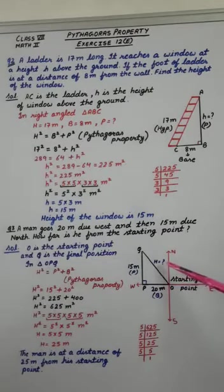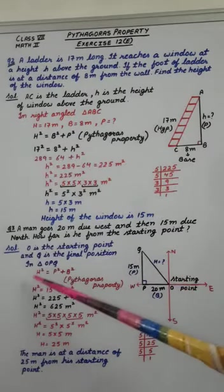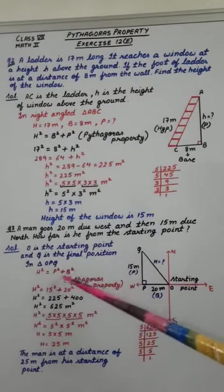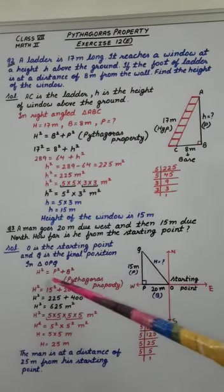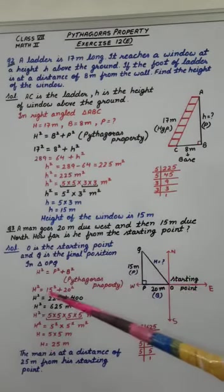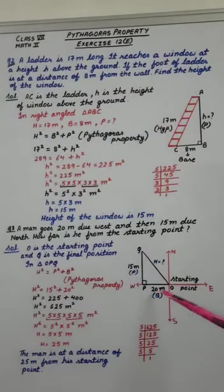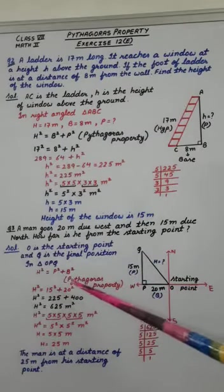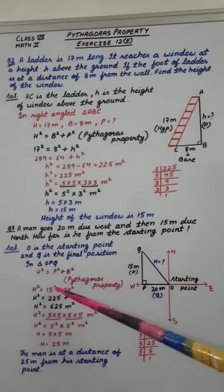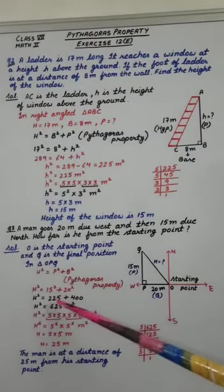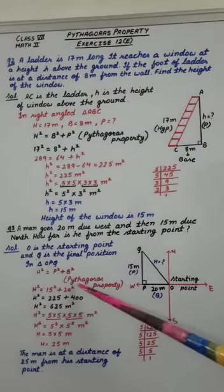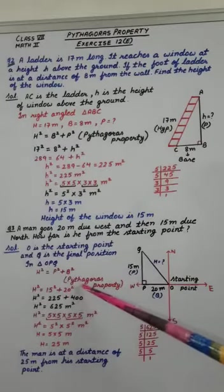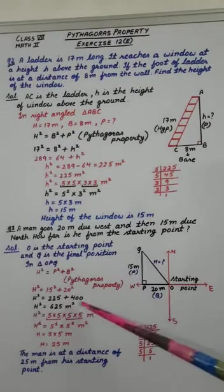By using Pythagoras property, H square equals P square plus B square. Perpendicular is 15, so 15 square plus base is 20, 20 square. Now, 15 square that means 15 multiply by 15, 225. 20 square that means 20 multiply by 20, 400. On adding them, answer is 625 meter square.